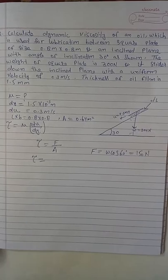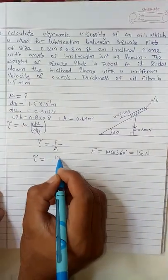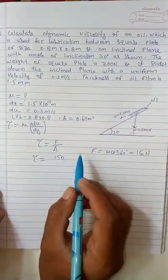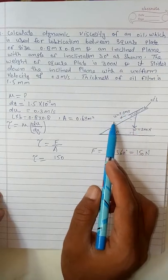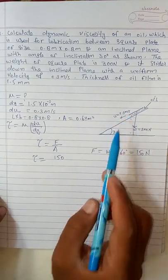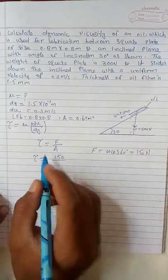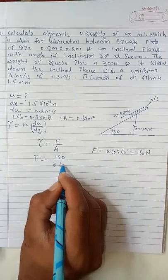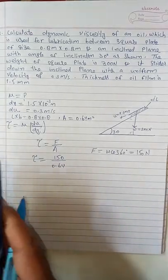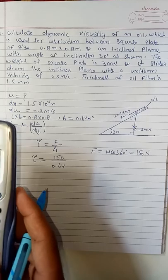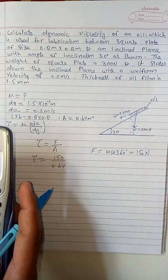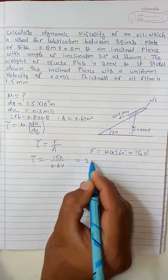So now I can write τ equals force—that is 150 Newtons, because this force is making the square pallet move—divided by area, which is 0.64.